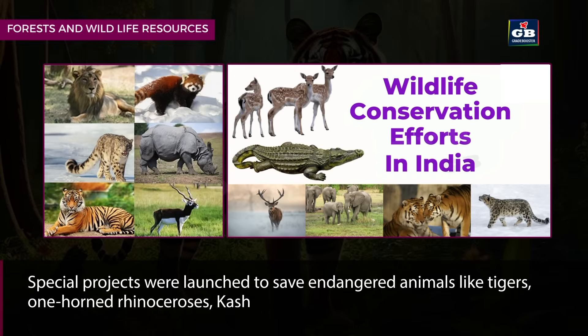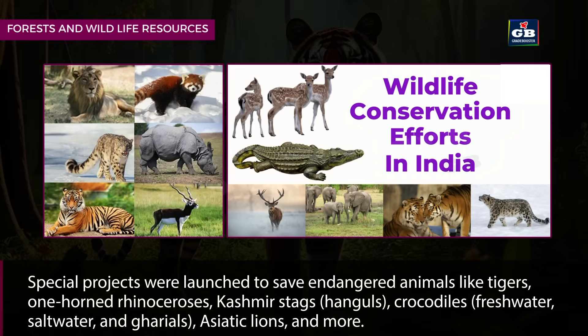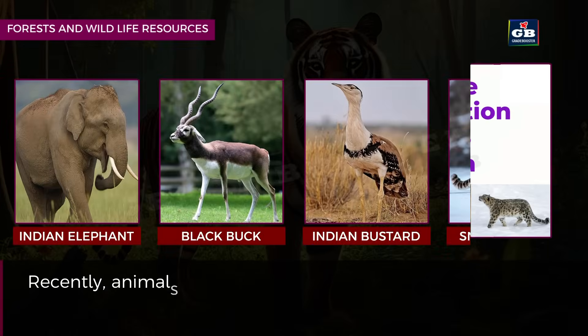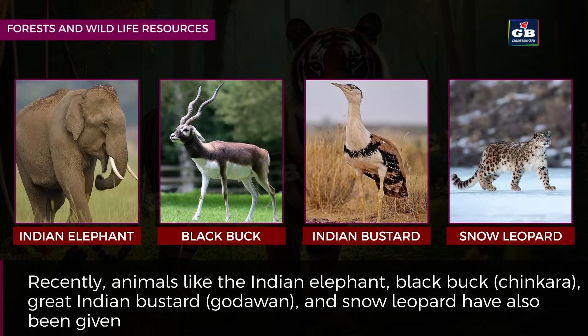Special projects were launched to save endangered animals like tigers, one-horned rhinoceros, Kashmir stags (called hanguls), crocodiles (both freshwater, saltwater and gharials), and Asiatic lions, among others. Recently, animals like the Indian elephant, black buck (chinkara), Great Indian Bustard (godawan) and snow leopard have also been given legal protection. These laws prevent hunting and trading of these animals to save them from extinction.